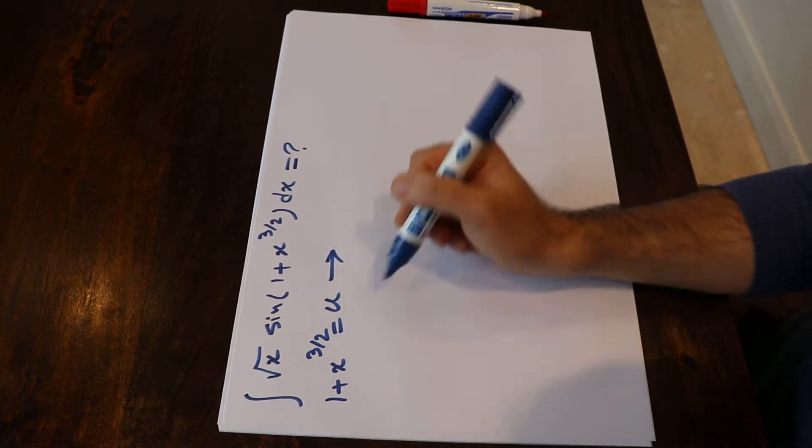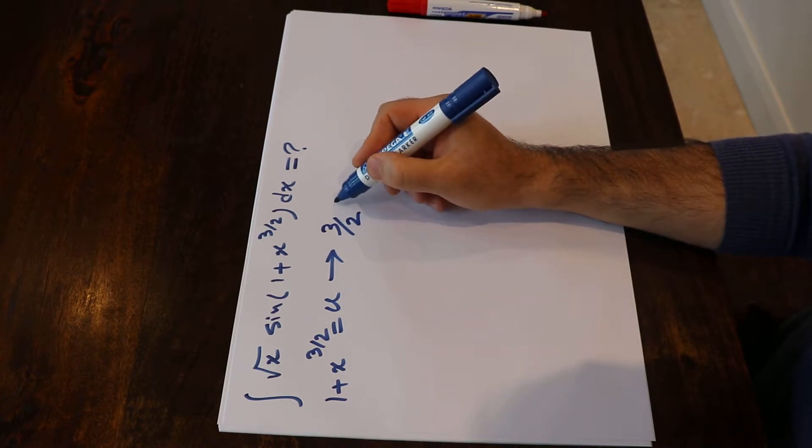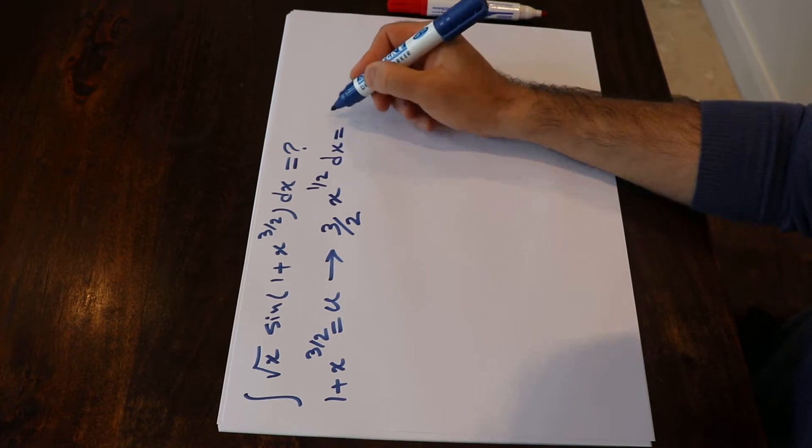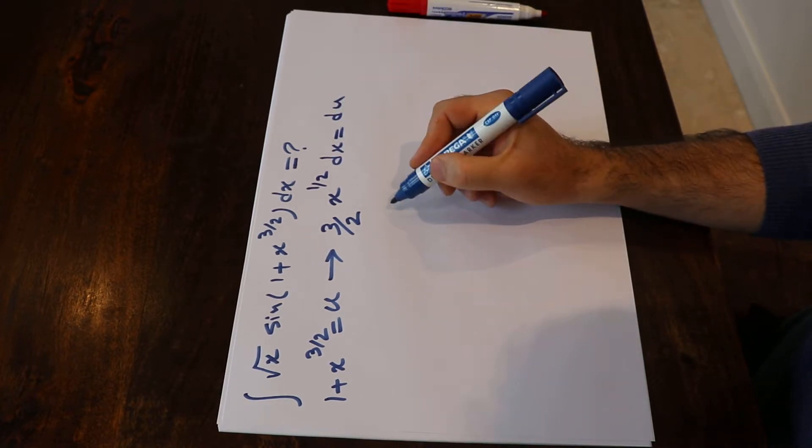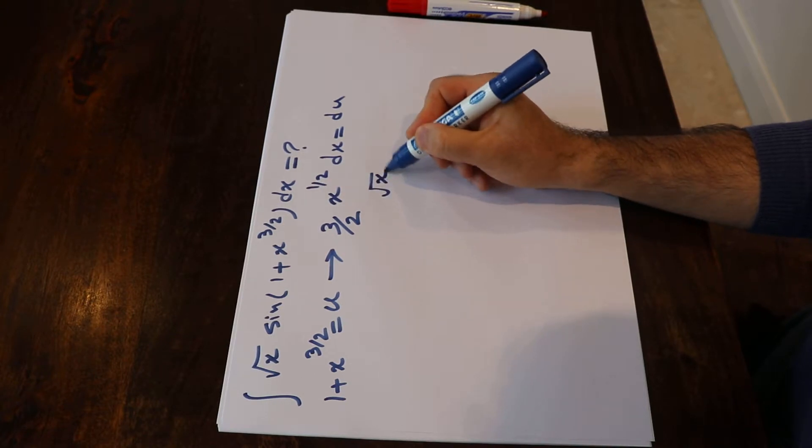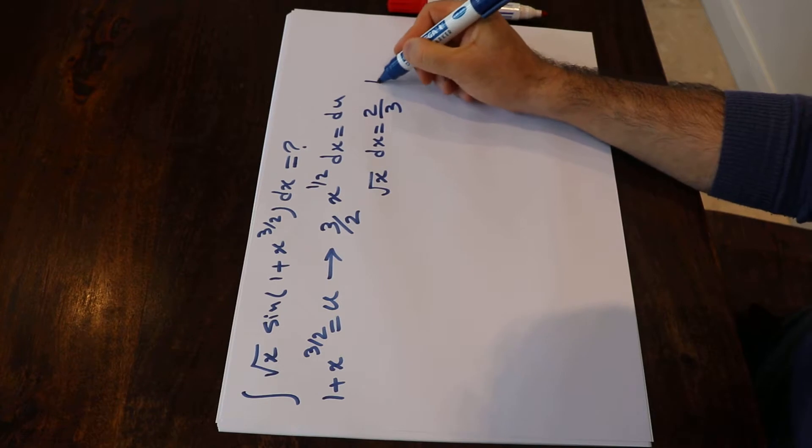and take the derivative from each side of this equation, that will be equal to 3/2 times x to the power of 1/2 dx equals du. Or you can write it as the square root of x dx equals 2/3 times du.